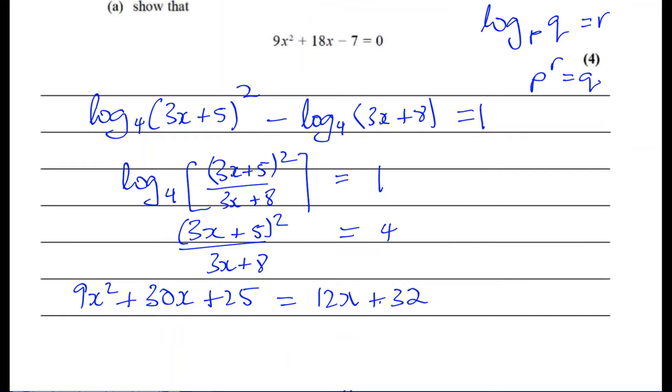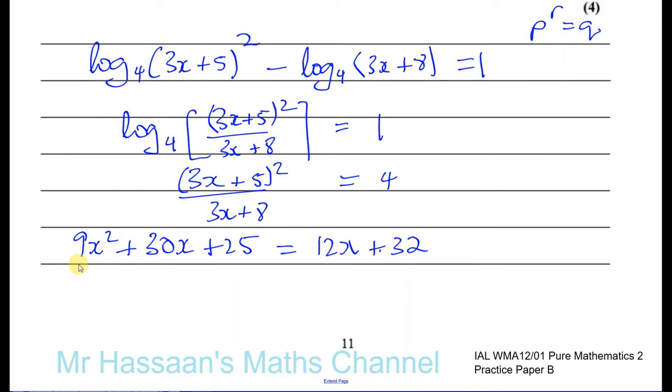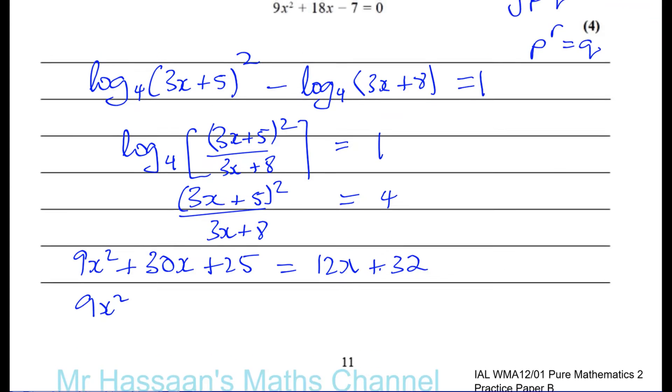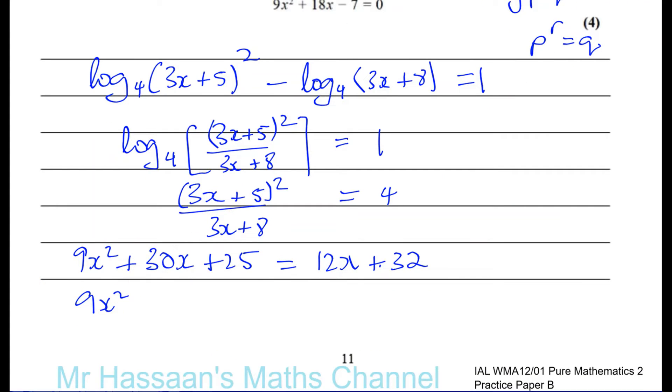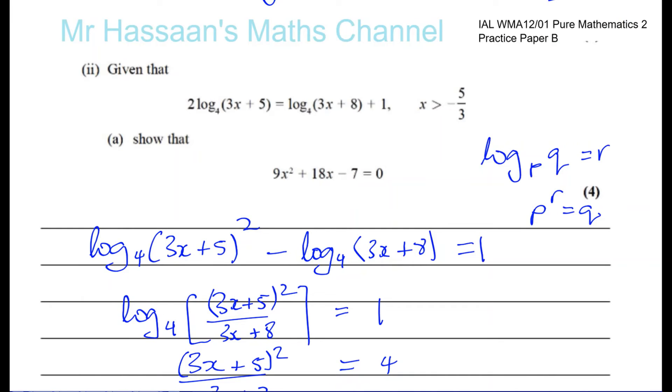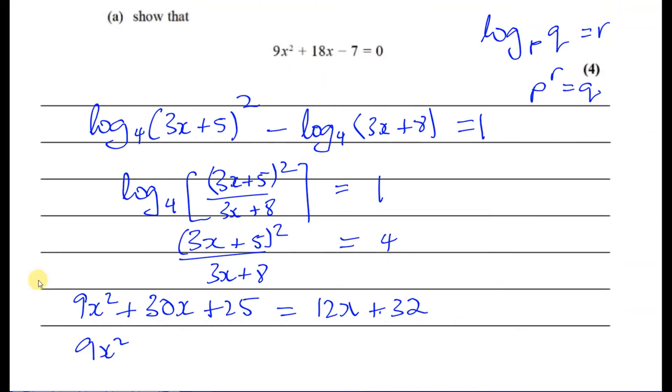And we want to express it like this, so we'll just bring everything on one side, and hopefully it'll work out. So you've got 9x squared. Let me see if I can keep that in sight. Yep. 9x squared. Oops, it's too high now. Okay, 9x squared. And I've got 30x minus 12x, which is plus 18x. That's good so far. And 25 minus 32 is minus 7 equals 0. So we're done. Finish that part of the question.